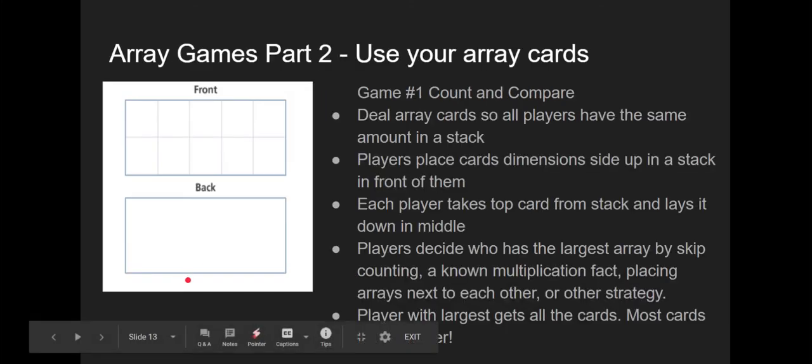There are several games that we learned in this unit. We learned how to play array games. Game number 1 was Count and Compare. This is a game you could play at home. You would simply deal out your array cards so that all the players have the same amount in a stack. You might play this game with your family at home. Players place the card dimensions side up in the stack in front of them. Each player takes a top card from the stack and lays it down in the middle. Players then discuss and decide who has the largest array. You could figure this out by skip counting. If you know the multiplication fact that it represents, you could place the arrays next to each other. Or you could use another strategy to solve that. The player with the largest array gets all the array cards and puts them in the bottom of their pile. At the end of the game, the person with the most cards is the winner.